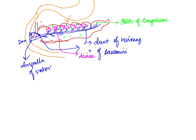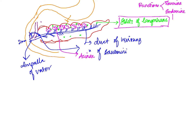Coming to the functions of the pancreas: there are two functions — one is the exocrine function and the other is the endocrine function. The islets of Langerhans are responsible for the endocrine function, whereas the acinar cells and ductal cells are responsible for the exocrine function.